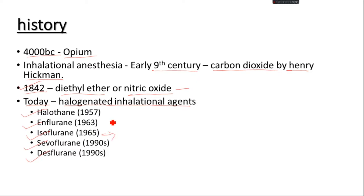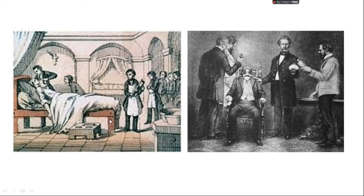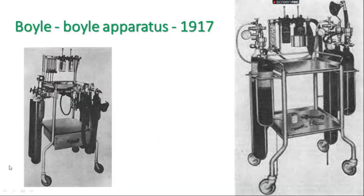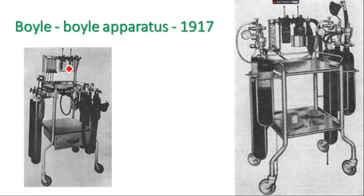These are some pictures depicting the old era, depicting the history, where no surgical protocol was being used. And now if we look at the first anesthetic machine, it was developed by Boyle and was known as the Boyle apparatus in 1817. He constructed the inhalational anesthetic machine just as depicted here.